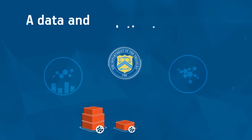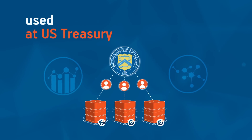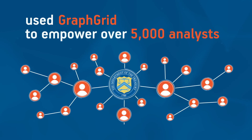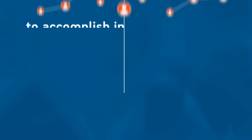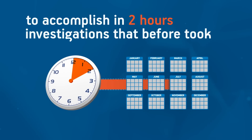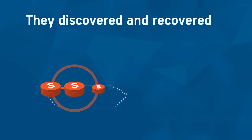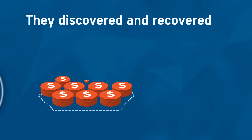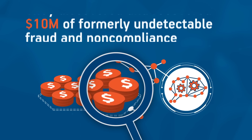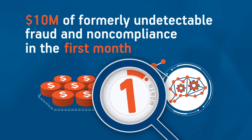A data and analytics team at US Treasury used GraphGrid to empower over 5,000 analysts to accomplish in 2 hours investigations that before took 6 months. They discovered and recovered $10 million of formerly undetectable fraud and non-compliance in the first month.